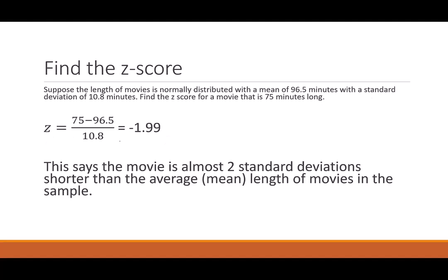So what does this mean? What does negative 1.99 mean? Well, it says this movie is almost two standard deviations shorter than the average mean length of movie times in the sample. So the negative says smaller, positive says larger, and that number that you get says how far away is it. So to show you a little bit more about that, I'm going to go over to Desmos and kind of look at where is this located.